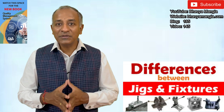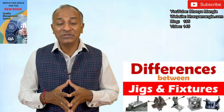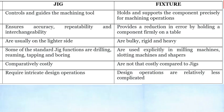Some key differences between jig and fixture: a jig is something which can control and guide the machine tool, whereas a fixture is something which holds and supports the component precisely for machining operations. In a jig, it ensures accuracy, repeatability, and reachability, while in the case of a fixture it provides a reduction in error by holding a component firmly on a table.